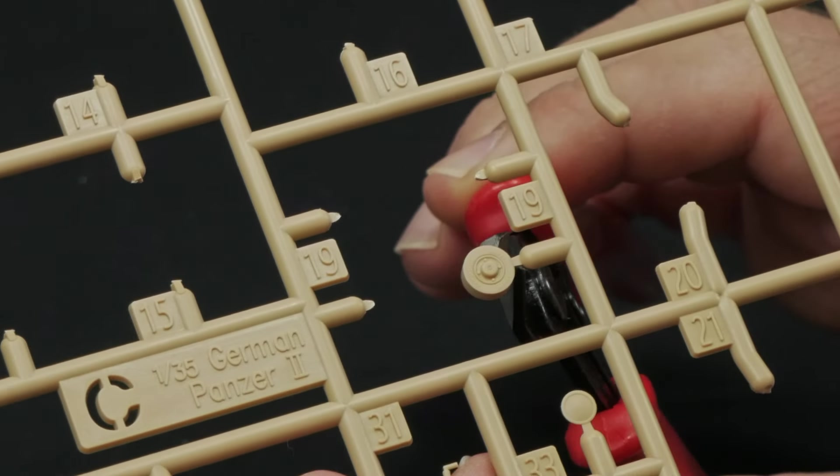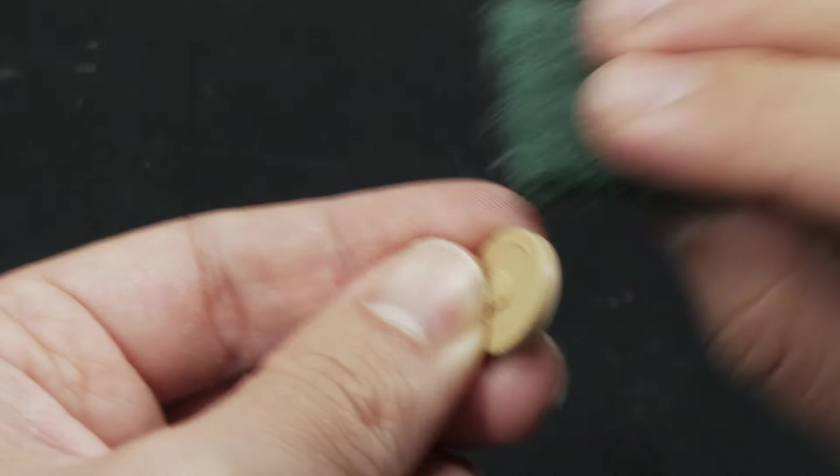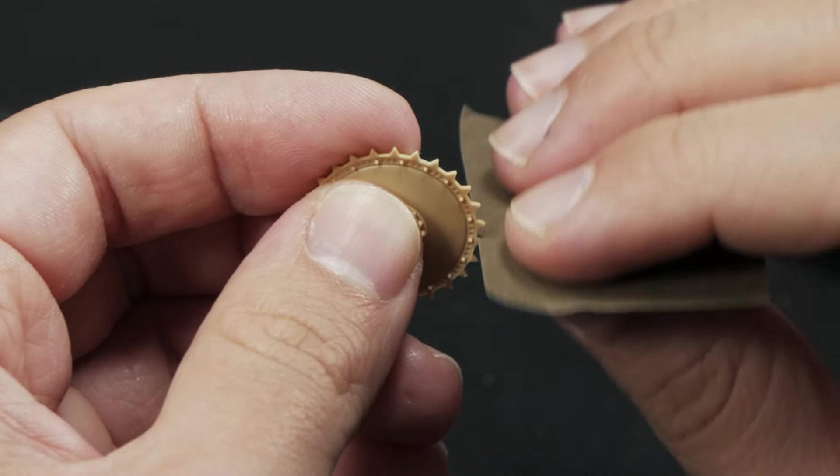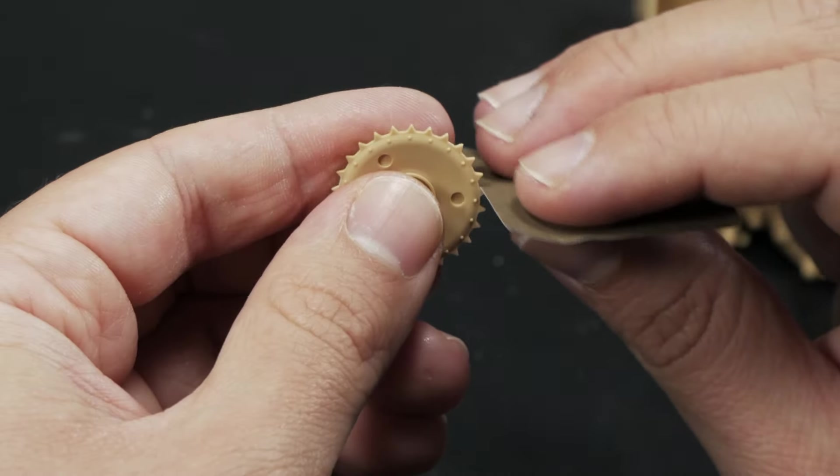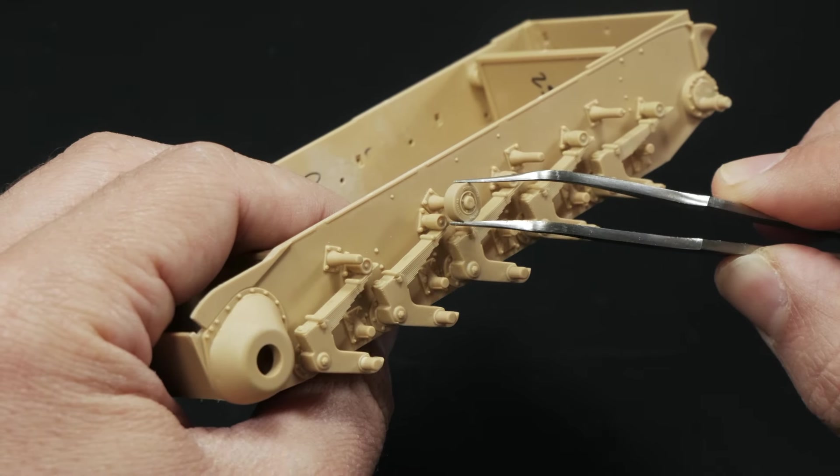The building process begins as usual, and I like to complete the running gear first. I find super tedious all cleaning and sanding processes for the wheel pieces and suspension parts, so I like to finish these things first and move to more interesting subjects.